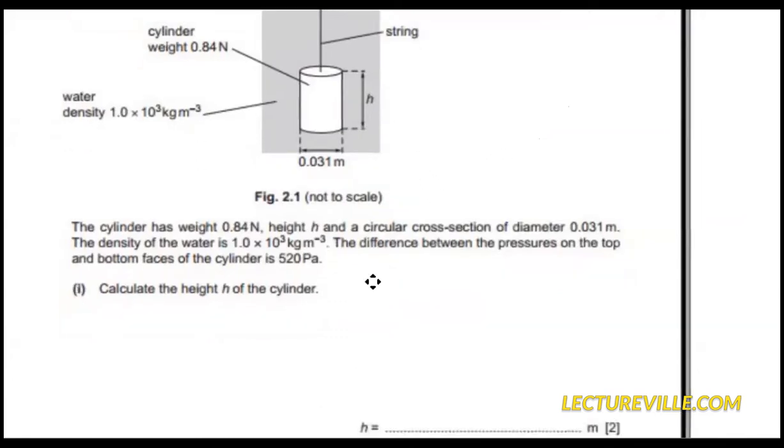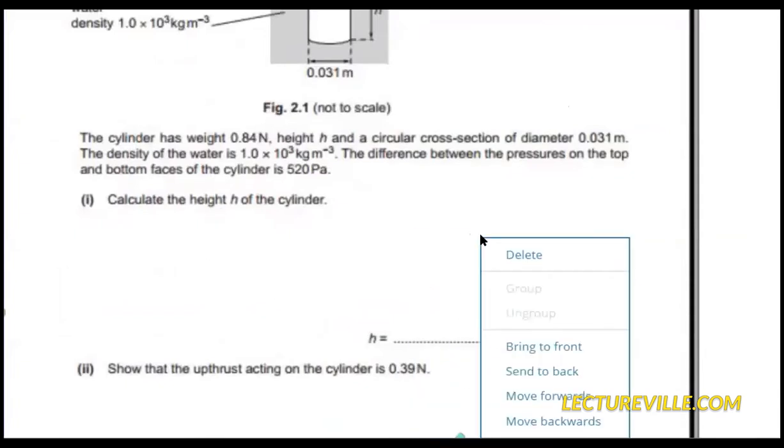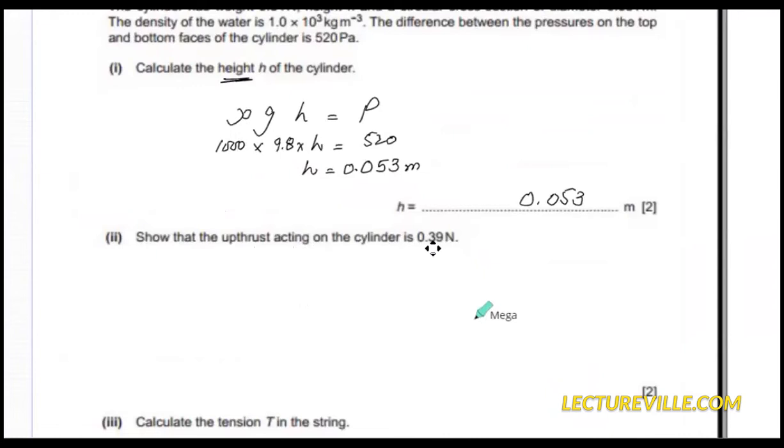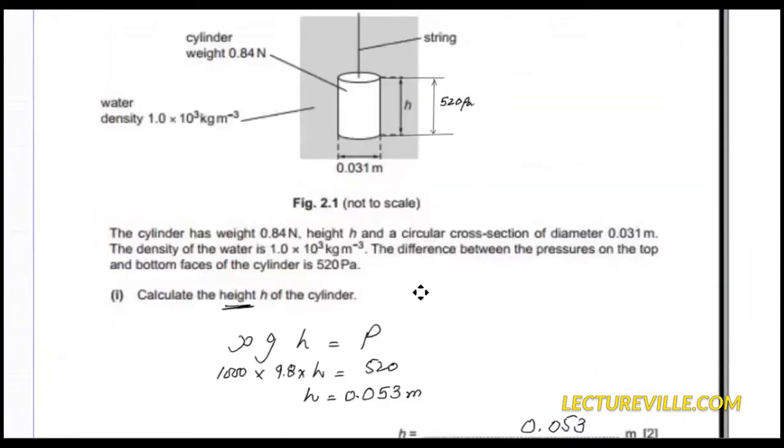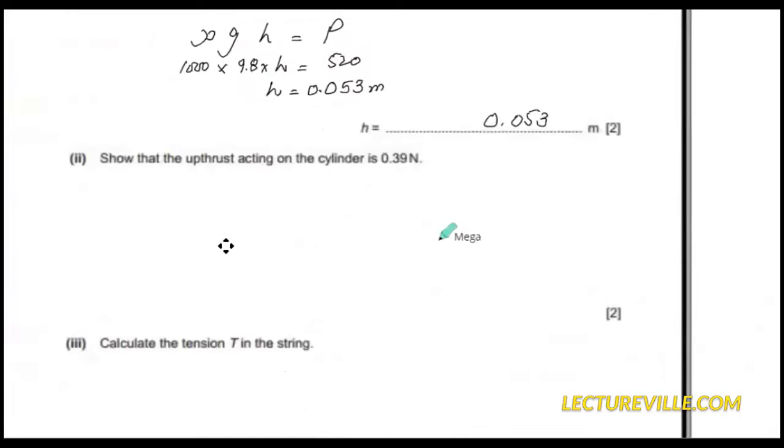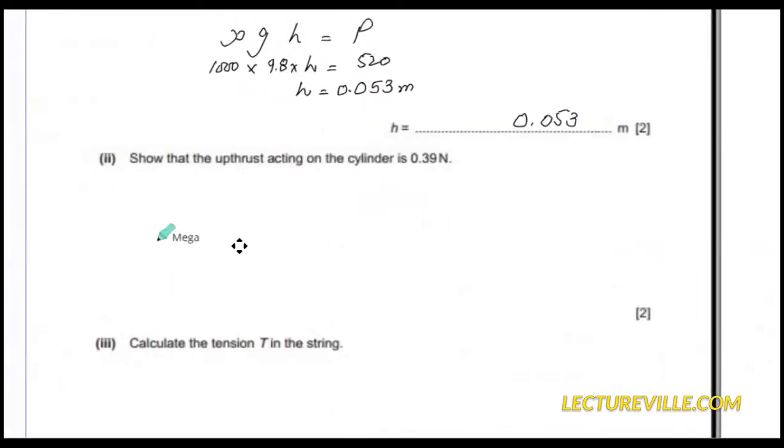Now the next part: show that the upthrust acting on the cylinder is 0.39 newtons. Remember the upthrust is actually the force that acts in the upward direction because of the pressure difference at the top and the bottom of the cylinder. Upthrust equals to pressure multiplied by area. Pressure is 520 and area is pi d squared, 0.031 squared over 4.